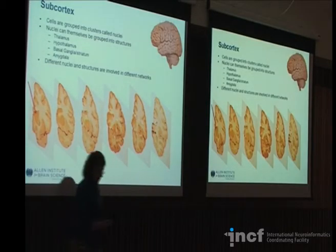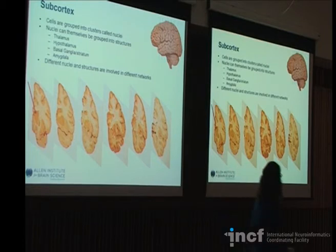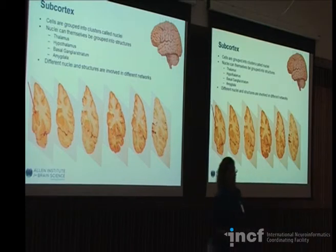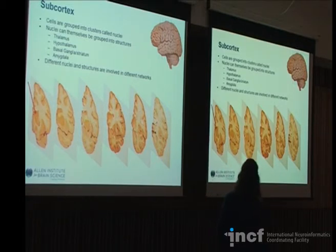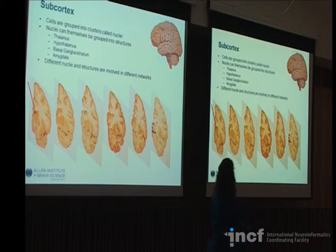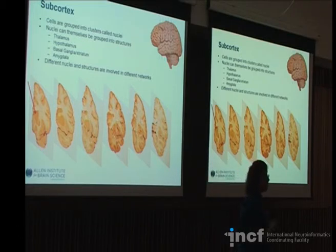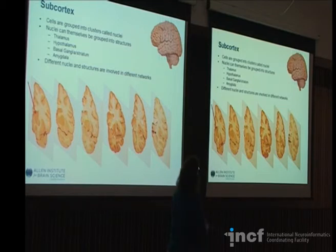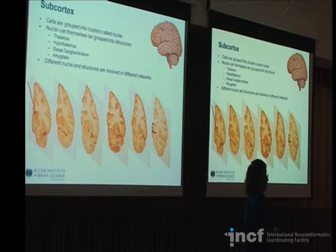So that's the cortex. But we've also got a subcortex. I'm going to talk about the subcortex mostly so that as you're going through the atlases and seeing these words, if you're not familiar with neuroanatomy, you're not completely lost. The subcortex sits deep inside the cerebrum. These are cells grouped into clusters called nuclei, and the nuclei themselves cluster to form larger structures. So you have the thalamus made up of multiple nuclei, the hypothalamus, and the basal ganglia, each involved with different networks in the brain.